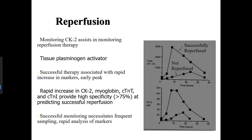Monitoring CK2 assists in monitoring reperfusion therapy with tissue plasminogen activator. Successful therapy is associated with a rapid increase in all markers and an early peak. Rapid increase in CK2, myoglobin, cTnT, and cTnI provides high specificity for predicting successful reperfusion, requiring frequent sampling and rapid analysis. During reperfusion, necrosis and inflammatory and toxic substances that built up during ischemia are rapidly carried through the bloodstream when blood flow is restored, which can sometimes cause greater damage.